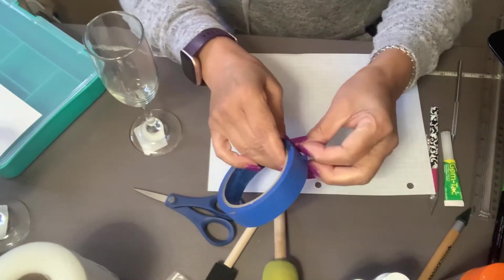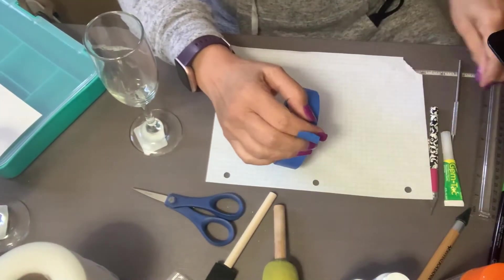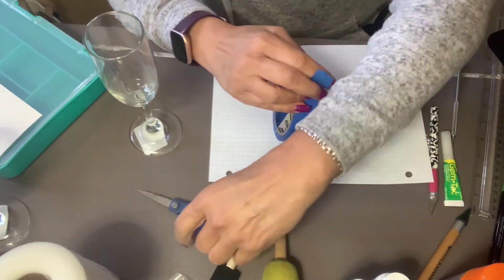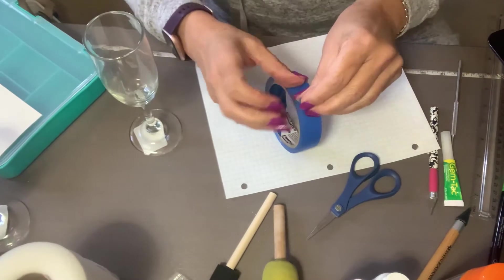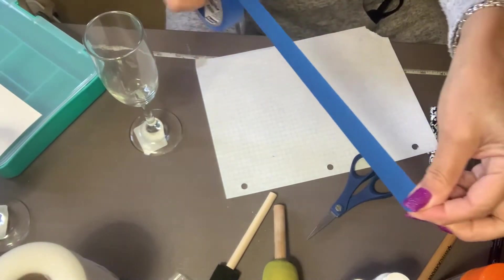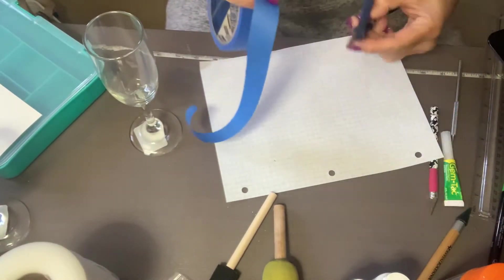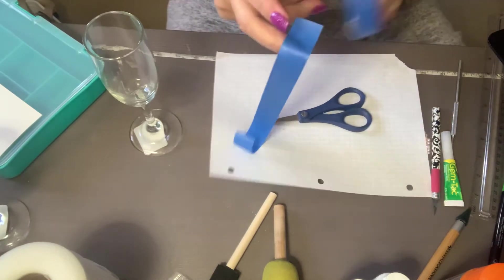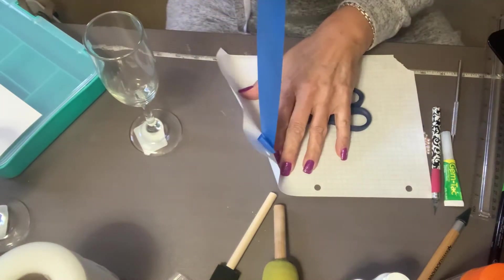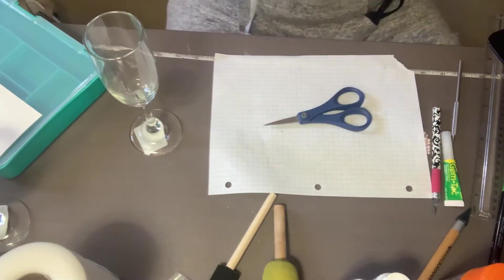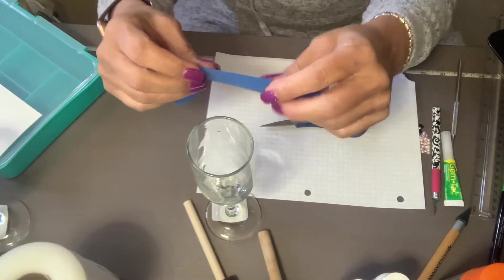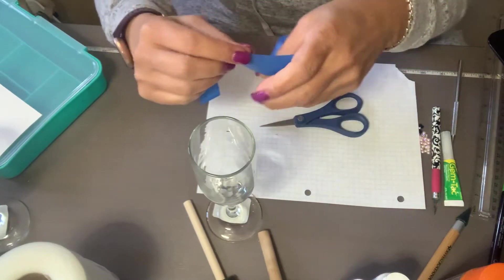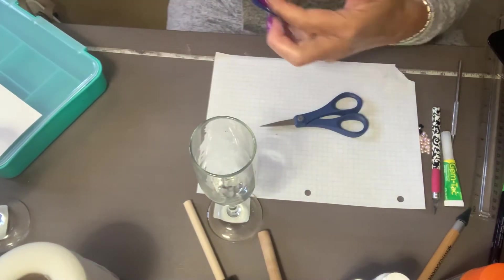So now what you're going to do, you're going to get a piece of the tape and pull aside the size that you think is the right size for your glass. So now what you're going to do, you're going to go on the side where it measures one inch, cut it halfway.